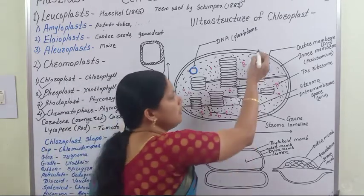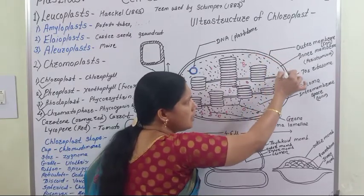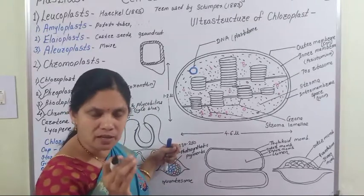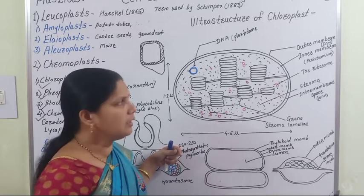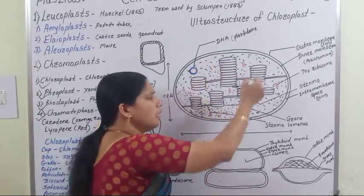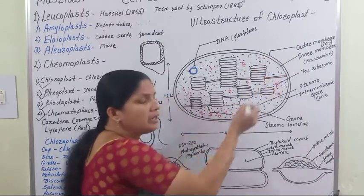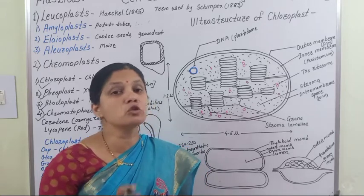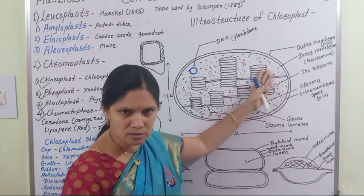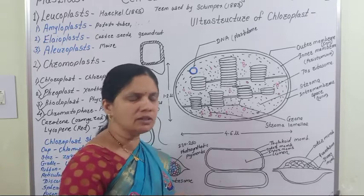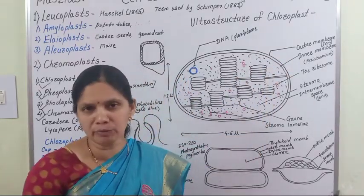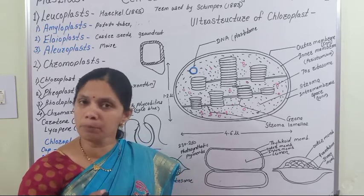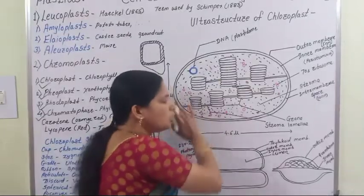In between the outer and inner membrane, there is an intermembrane space, and the size of this intermembrane space is 10 nanometers. Inside the inner membrane, there is a protein fluid or protein matrix, which is called the stroma. The outer and inner membranes of the chloroplast together are known as the peristromium.